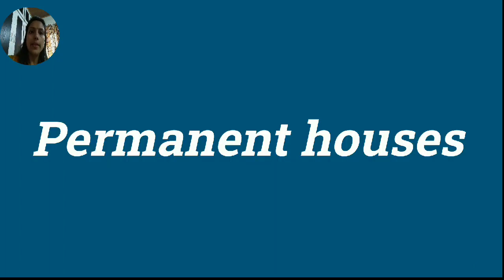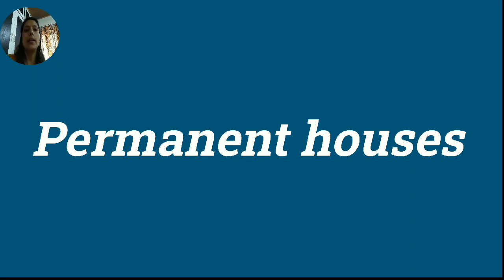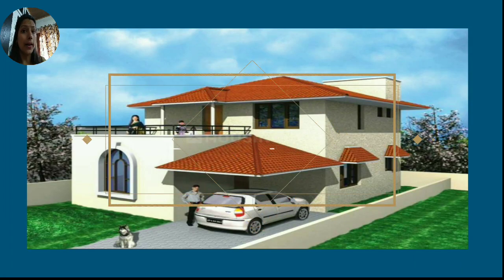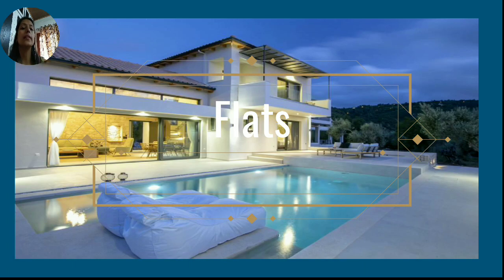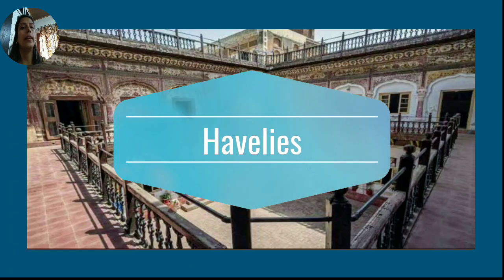Next is the permanent house. As the name indicates, permanent houses are those houses that are strong enough and are permanently constructed for a long time. They do not easily get damaged. These are usually made of cement, bricks, stones, iron rods, glass, and wood. For example, bungalows, flats, apartments, multi-story buildings, villas, and havelis.